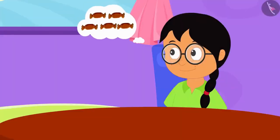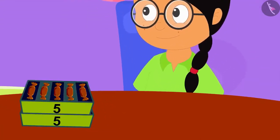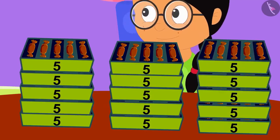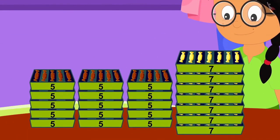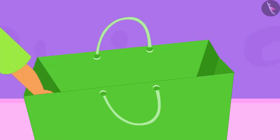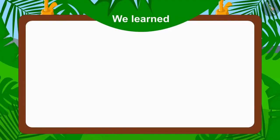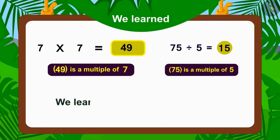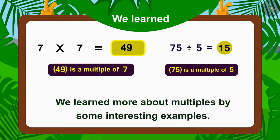With the help of your answer, Meenu made 15 groups of chocolate candies and filled 15 boxes. Meenu finally filled all the candies in the boxes. She is taking these boxes in a big bag to share them among her friends. In this video, we learned more about multiples by some interesting examples. In the next video, we will look at some interesting concepts related to this.